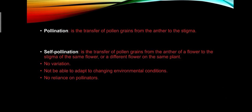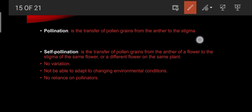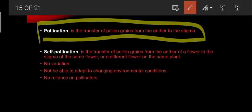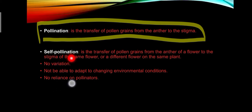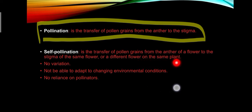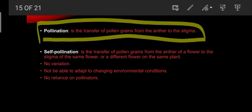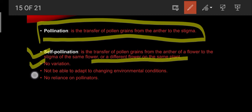Pollination is the transfer of pollen grains from the anther to the stigma. Self-pollination is the transfer of pollen grains from the anther of a flower to the stigma of the same flower or a different flower on the same plant. There is no variation in self-pollination, meaning the plant is not able to adapt to changes in environmental conditions, but there is no reliance on pollinators.